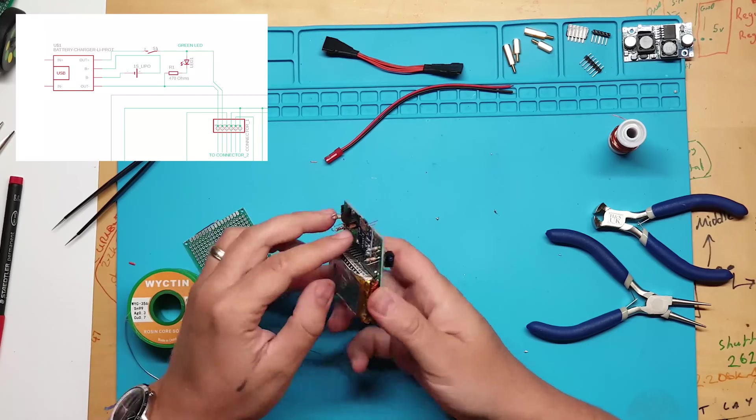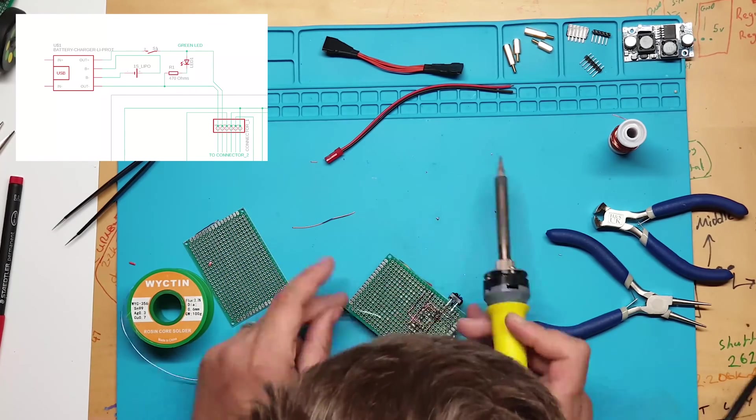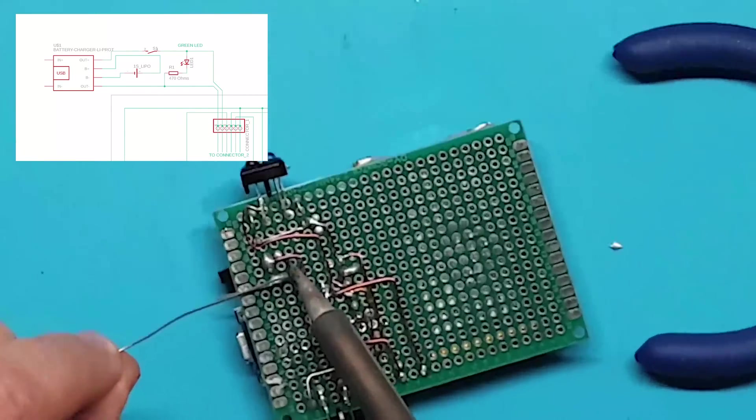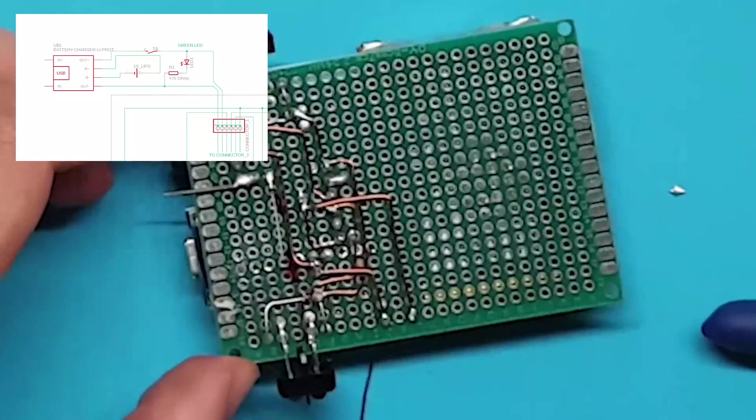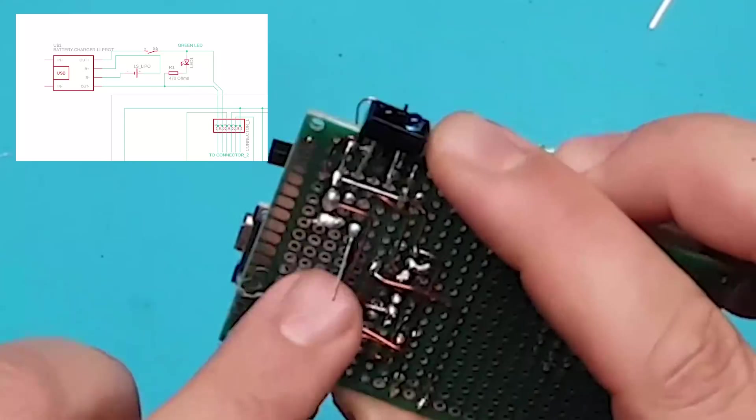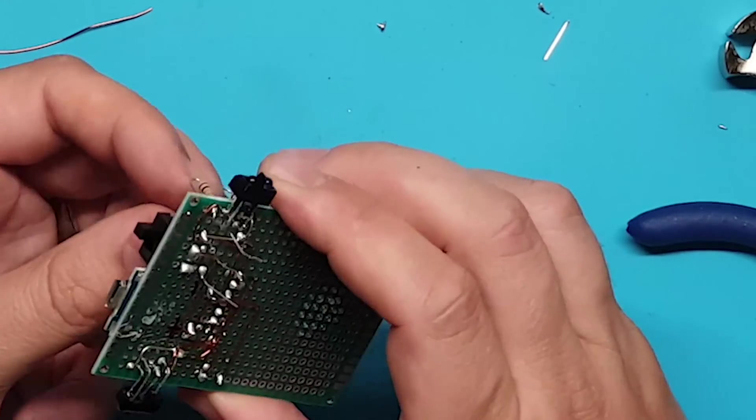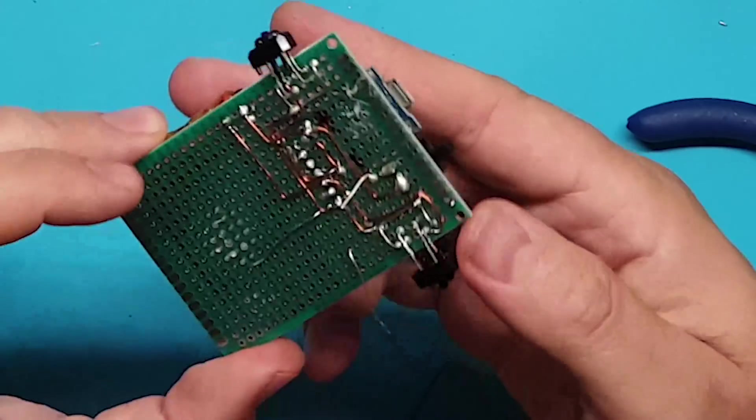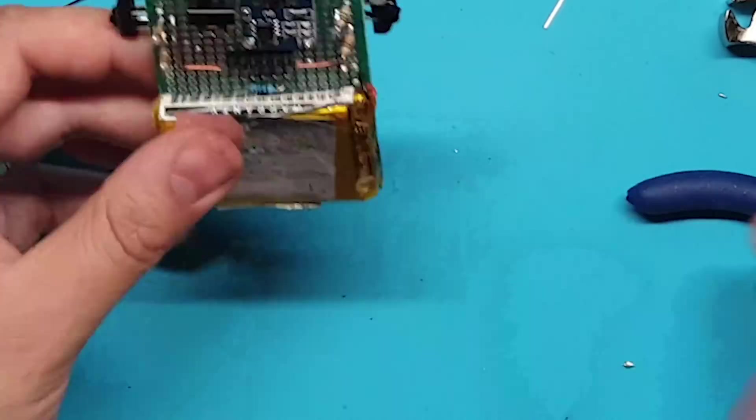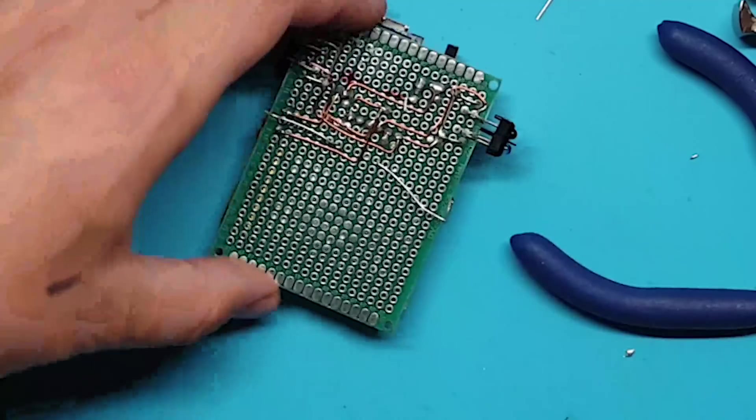It doesn't matter too much where the components are placed as long as they are connected in accordance with the schematic. The only critical component on this board is the inter-board connector as this needs to line up with the top board. I'm doing the same with the resistor, looking for a suitable place to put it where it can be connected easily. Bingo, this looks like the ideal place.